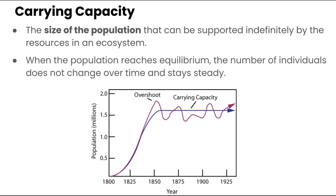What happens is the population for a particular ecosystem will increase, going up until it reaches a point of equilibrium — shown as a flat line — which means the population is not really changing over time. That's called the carrying capacity: the number of individuals that the environment can sustain. When a population grows, each individual gets a smaller share of resources. Eventually, no more individuals can be supported and the population stops growing, hitting this point of equilibrium.